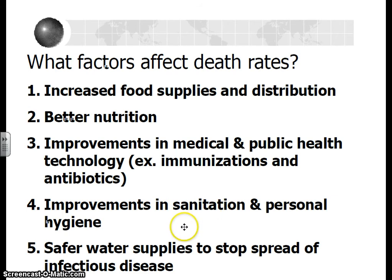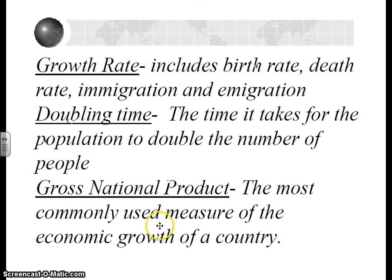And a lot of you guys have mentioned in class that a better, cleaner water supply can definitely reduce death rates — it can stop the spread of infectious disease. Here's another example of a slide you might want to pause at so that you can write down definitions. A growth rate has to take into account birth and death, as well as immigration and emigration. Doubling time is exactly what it sounds like — the time it takes for a population to double in numbers.